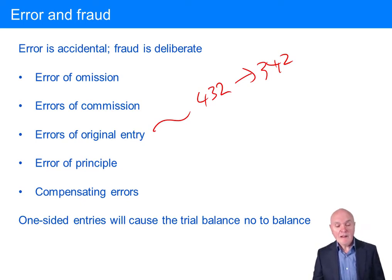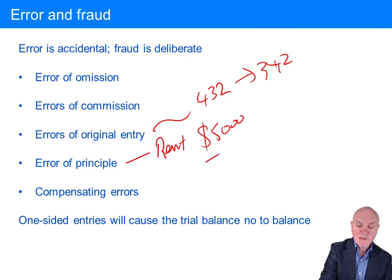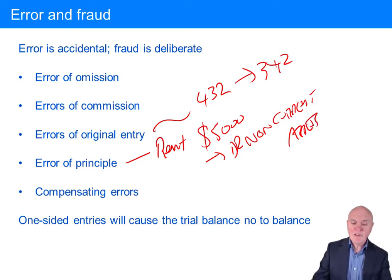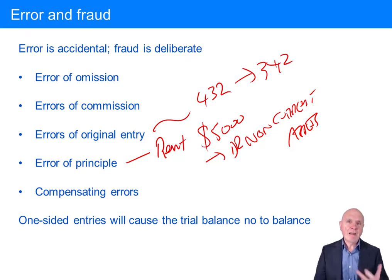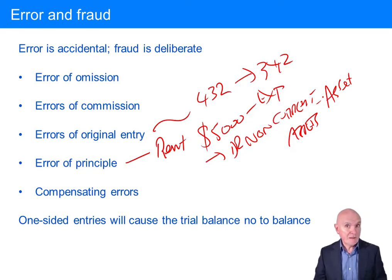An error of principle is where, for example, you get an invoice for rent — say 5,000 — but what you actually do is debit non-current assets. You assume that instead of paying rent, you're actually buying the property. It's called an error of principle because this should be an expense, but you treat it as an asset. It's quite serious, as it affects the profit and loss account in a very fundamental way.